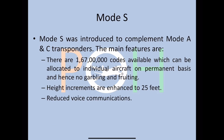Mode S overcomes these issues as a complement to Mode A and C. Around one crore sixty-seven lakh codes are available, allocatable to individual aircraft on a permanent basis, eliminating garbling and fruiting. Height increments are enhanced to 25 feet, though ATC panel displays are currently maintained at 100 feet. Voice communications are also reduced because Mode S can transmit a lot more data, reducing the need for VHF voice channels.